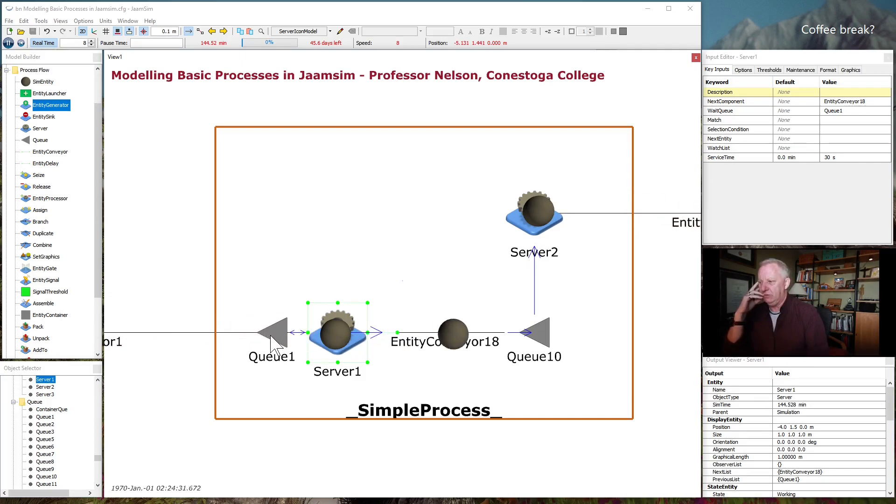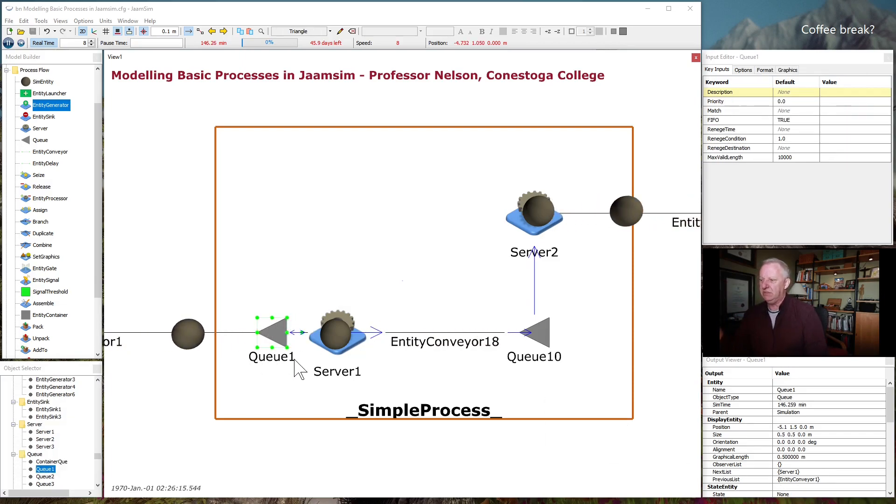This can also be a formula, which I'm not going to get into in this particular video. But you define how long does it take to process the entity once it arrives. Every server needs a queue. It can only operate on one entity at a time. So if there's additional ones coming in, this model needs a place for them to park. And so that's the queue. Effectively, this is like your WIP, work in process, and these are your process steps.